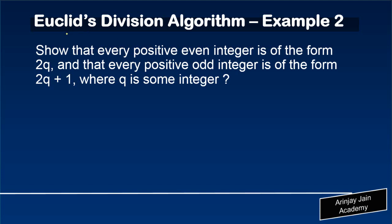Let's take some example on Euclid's division algorithm. Show that every positive even, even means what? 2, 4, 6, 8, integer